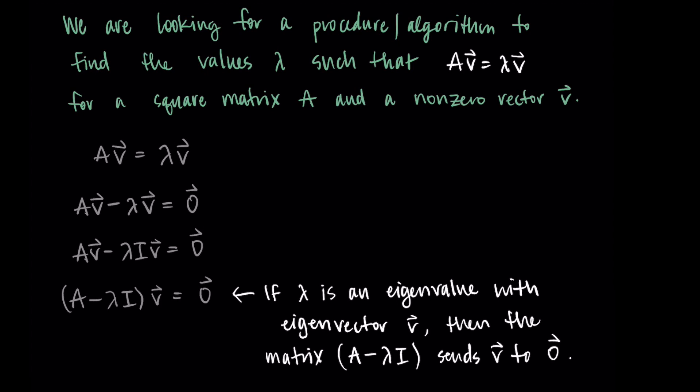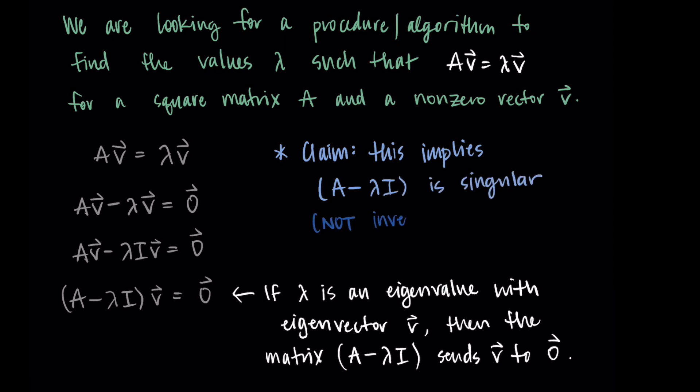Writing this in our new language: if lambda is an eigenvalue corresponding to eigenvector V, then the matrix A minus lambda I will send vector V to the zero vector. My main claim is that this implies A minus lambda I is singular — not invertible. We're trying to relate this new concept back to old concepts we've already learned, and by writing it in this way, we can say that A minus lambda I does not have an inverse.